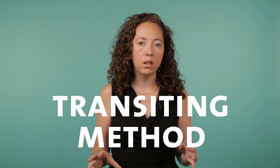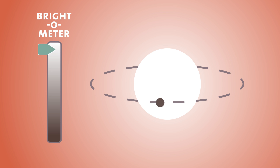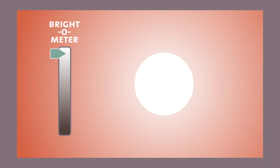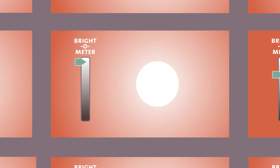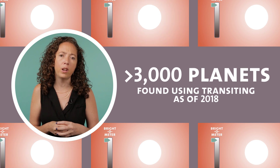One of the most popular and productive is called the transiting method. You can see the light of a star dip ever so slightly in a cyclic pattern due to a planet moving in front of it from Earth's perspective. We watch thousands upon thousands of other stars and look for tiny dips in the light. Thousands of planets have been found that way.